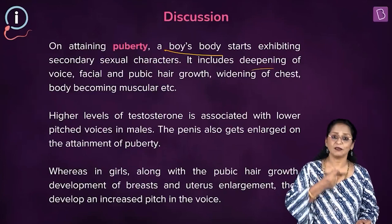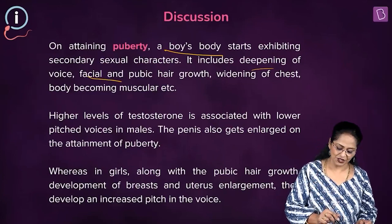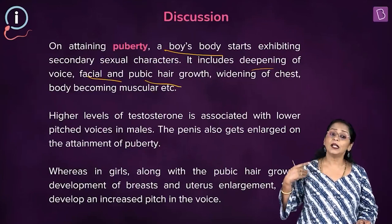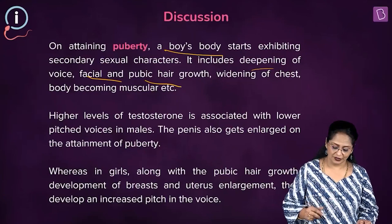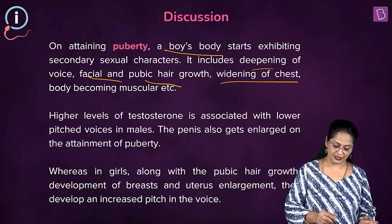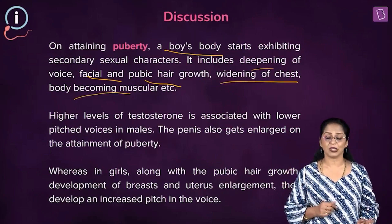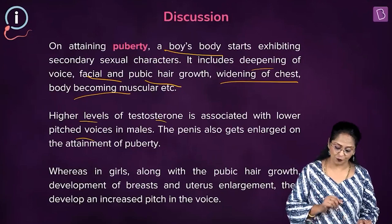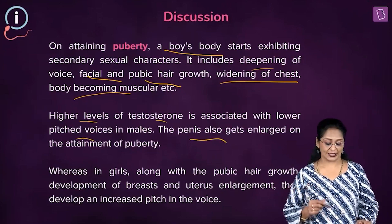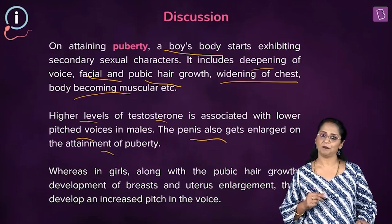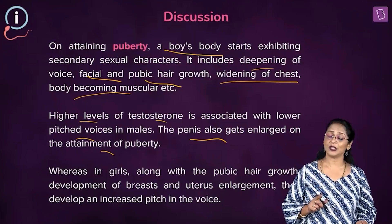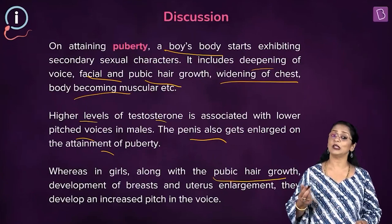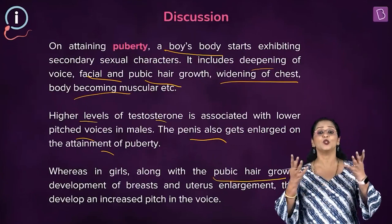Adam's apple becomes prominent in males. Facial and pubic hair growth, beard, acne, underarm hair, pubic hair. Widening and broadening of the chest, body becoming more muscular, aggressiveness. Higher levels of testosterone are associated with low-pitched voice in males. The penis also gets enlarged when they attain puberty. In girls, secondary sexual characteristics include pubic hair growth, armpit hair growth, development of breasts, and enlargement of the uterus.